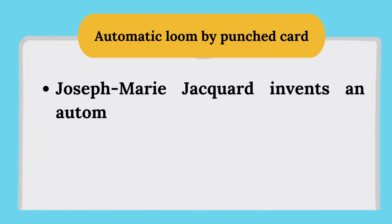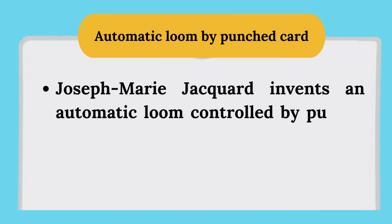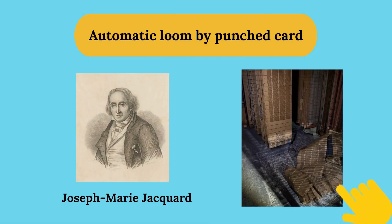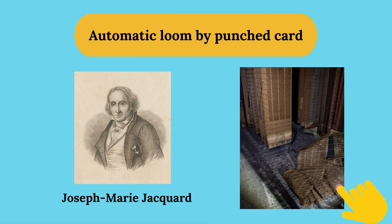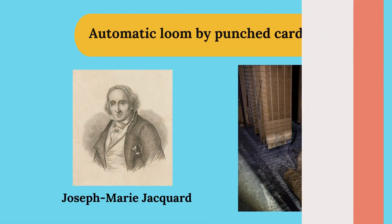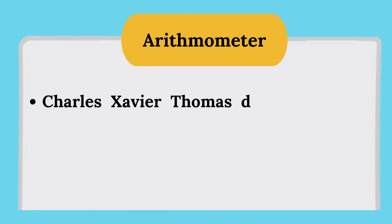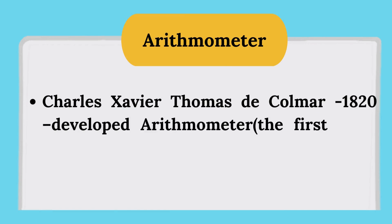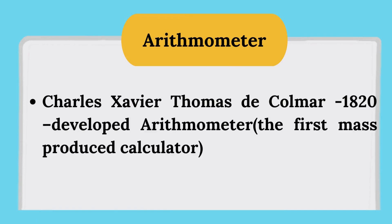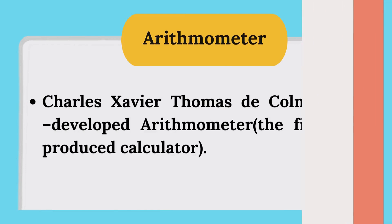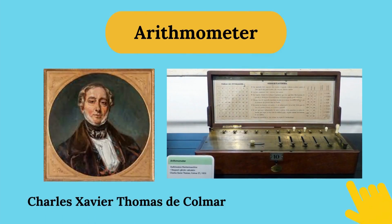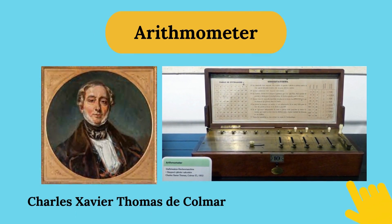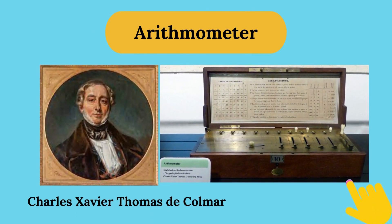Joseph Marie Jacquard invented an automatic loom controlled by punch cards in the early 1800s. Charles Xavier Thomas de Colmar, in 1820, developed the Arithmometer, which became the first mass-produced calculator.